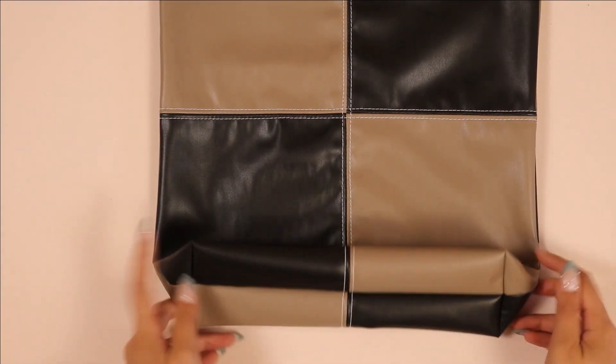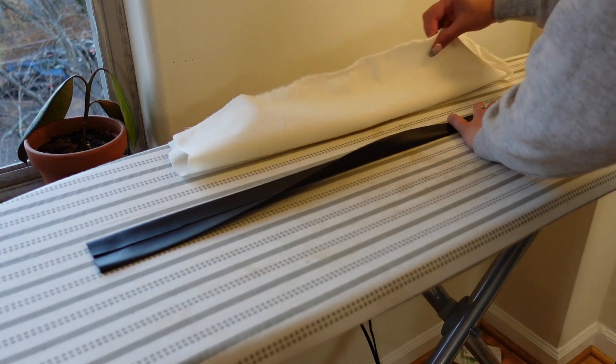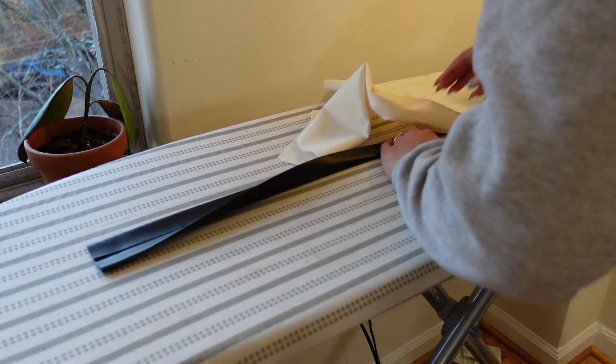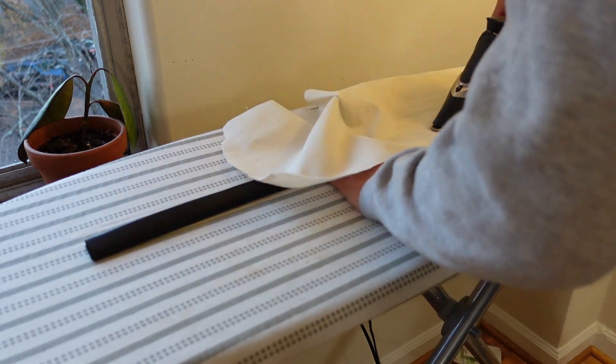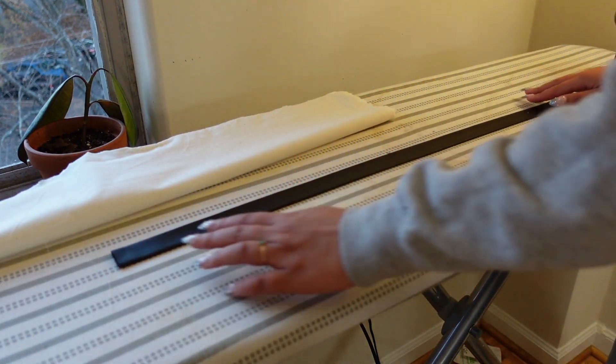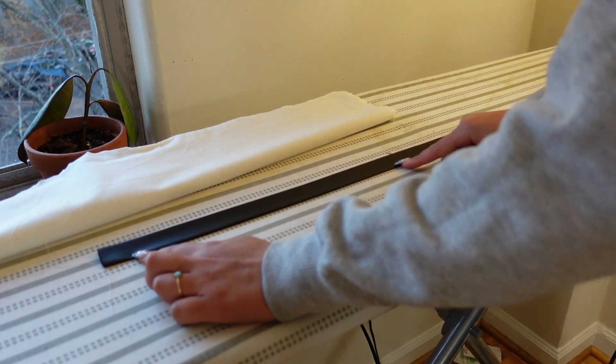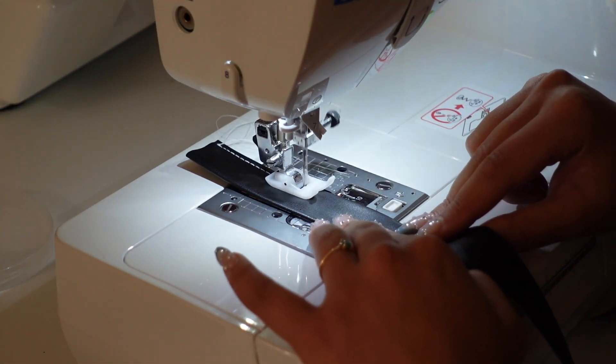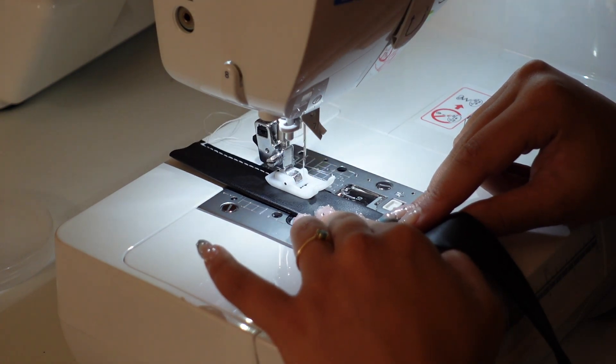Now to make the straps. I'm folding the straps into quarters, basically folding the edges to the middle and then folding it in half once again. I'm pressing it with my iron. Because I'm using faux leather, I'm putting muslin on top or a press cloth so I don't burn the leather. Then I'm just going to top stitch that down on either side, about an eighth of an inch away from the edges.